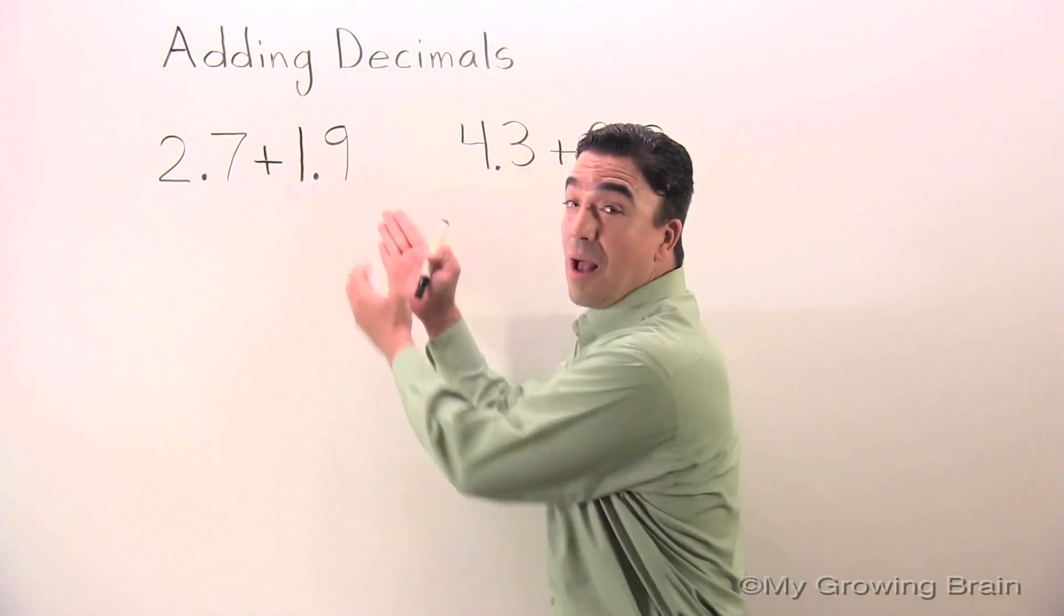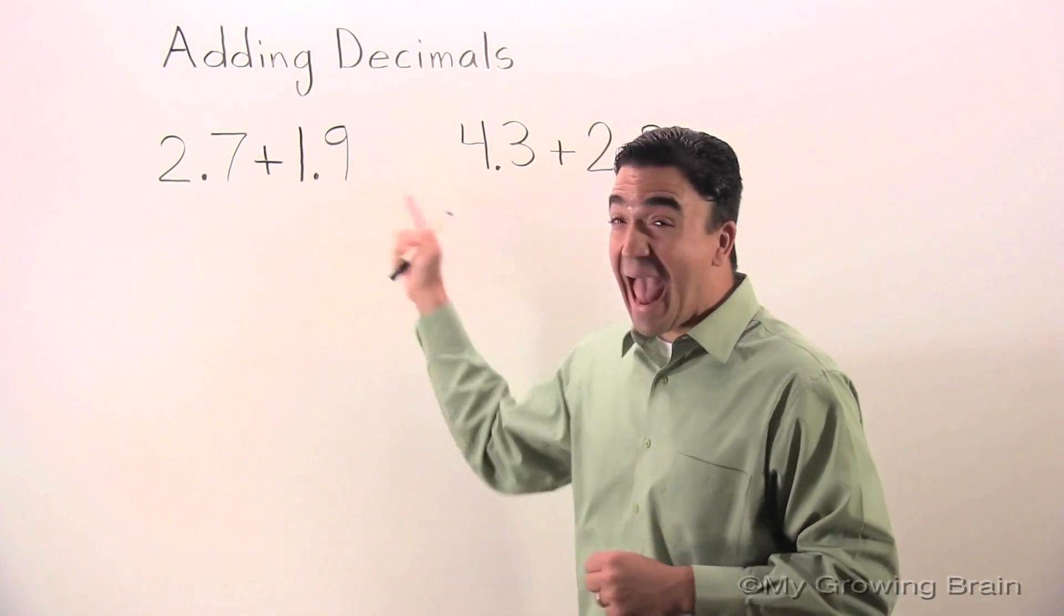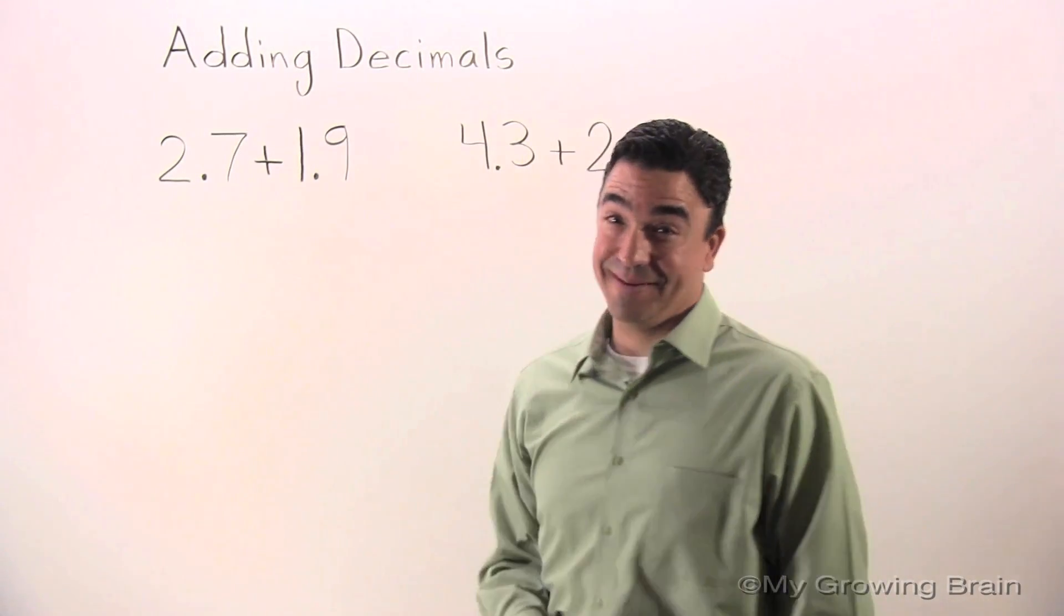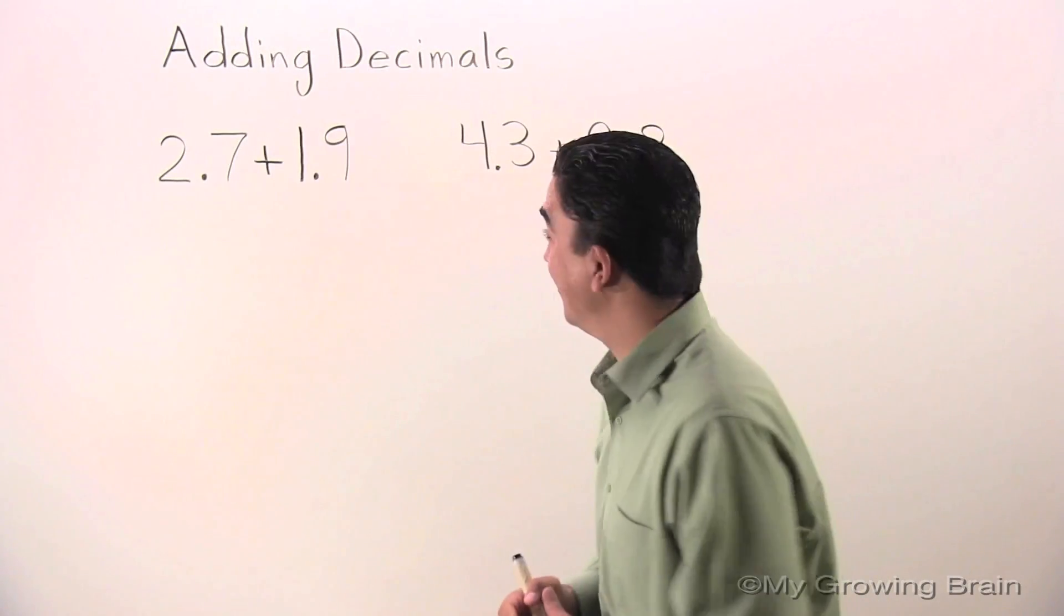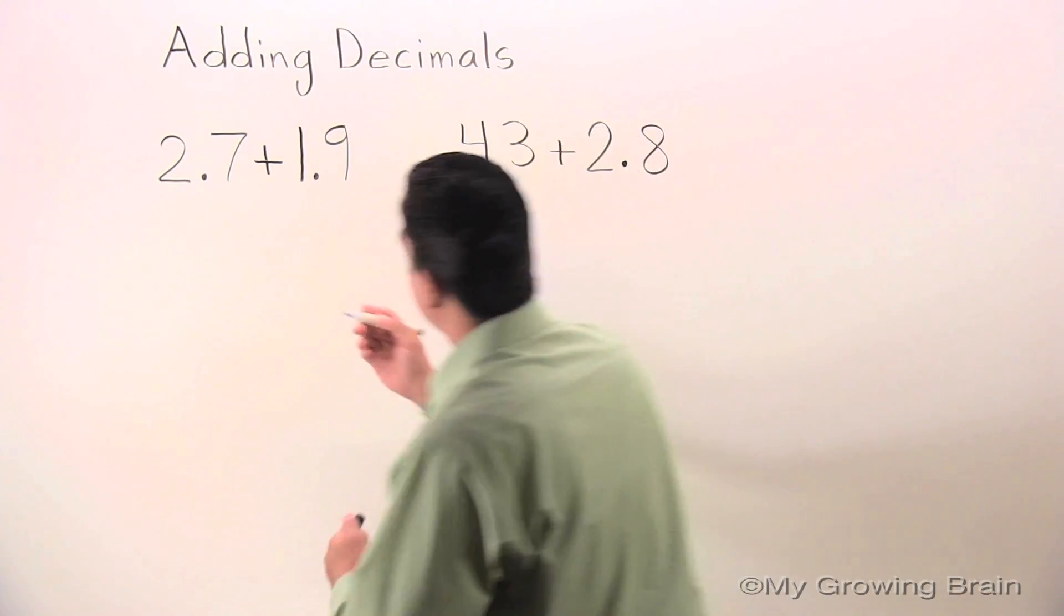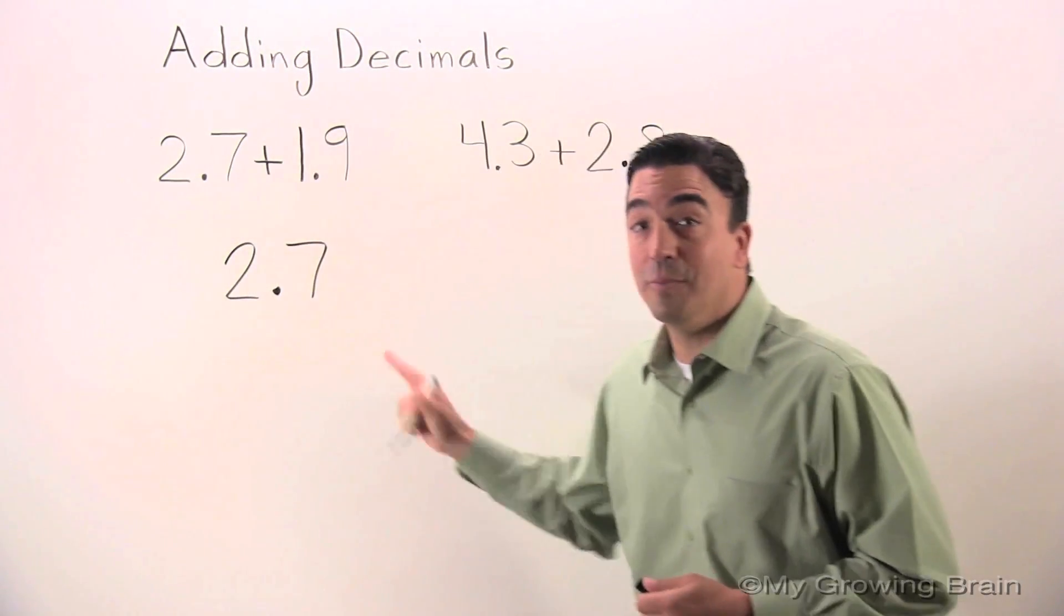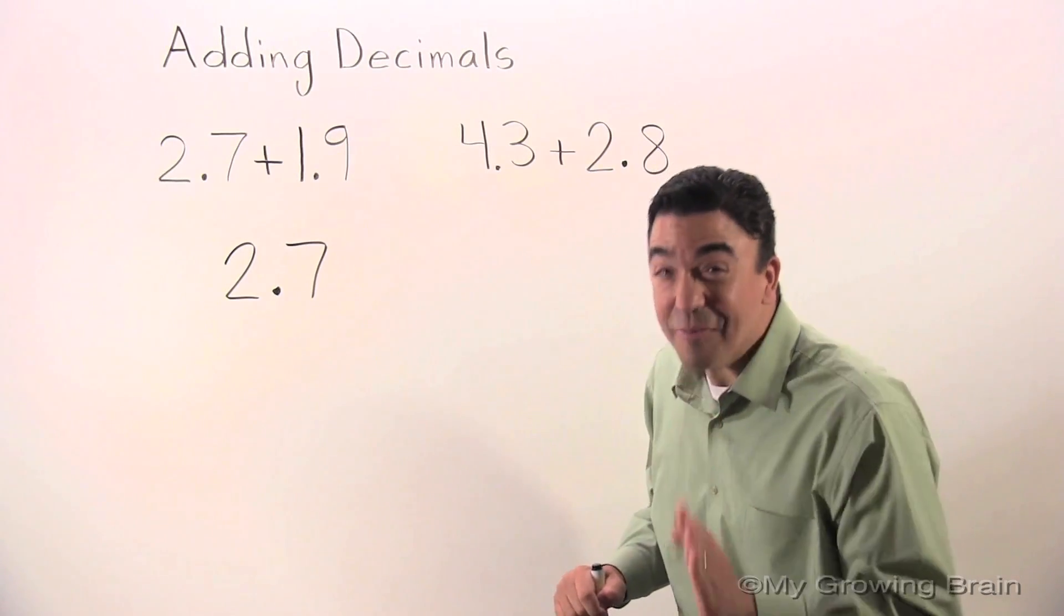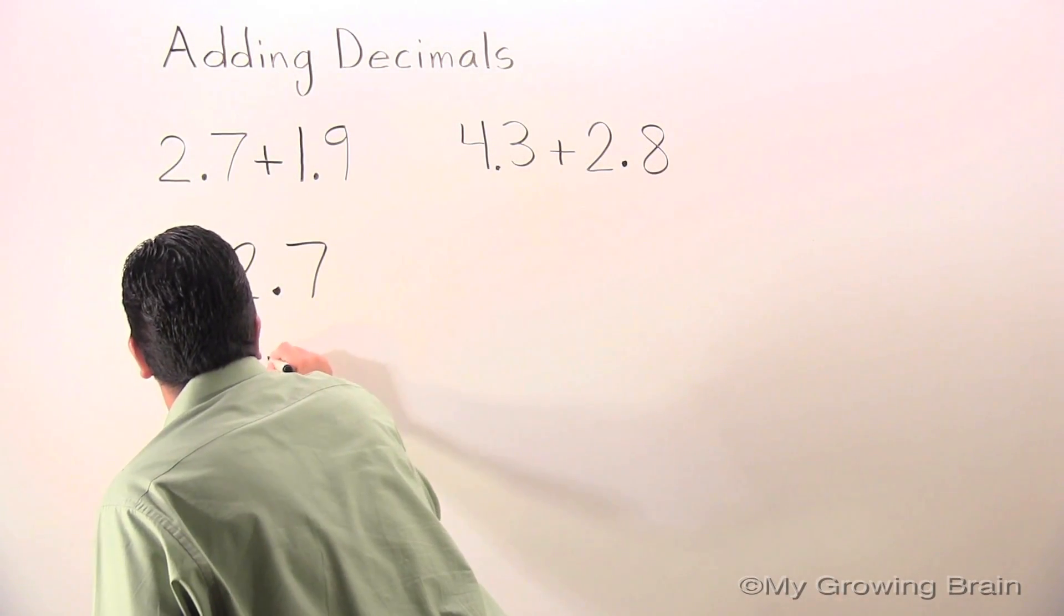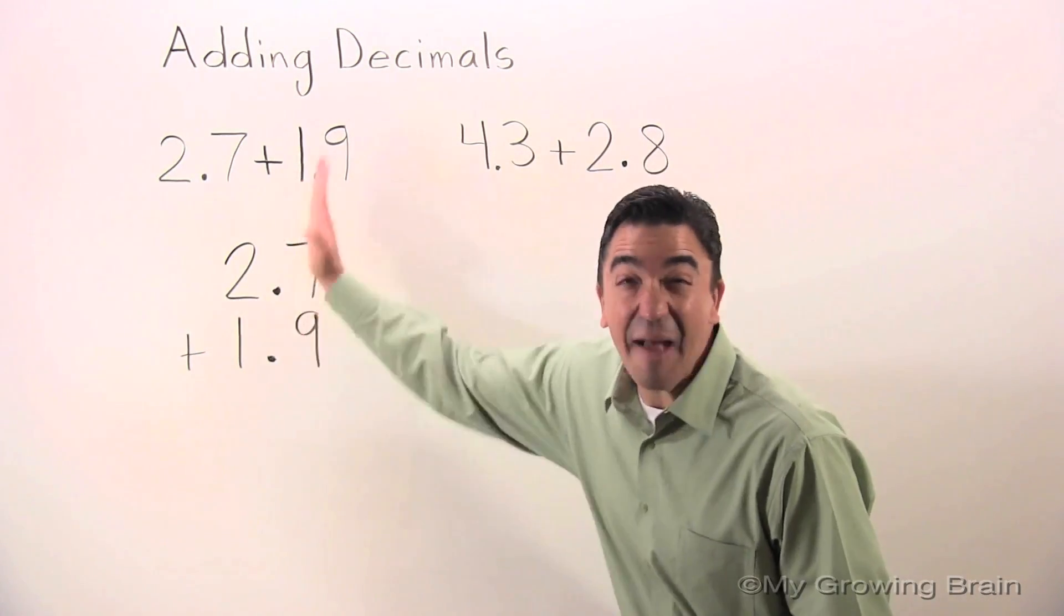I think we're ready to go. We're going to put this problem into a workable format. When we add decimals, the decimals must be lined up. I'm excited. Let's go. Remember, decimals must be lined up. 2.7 plus 1.9. Line up the decimals.